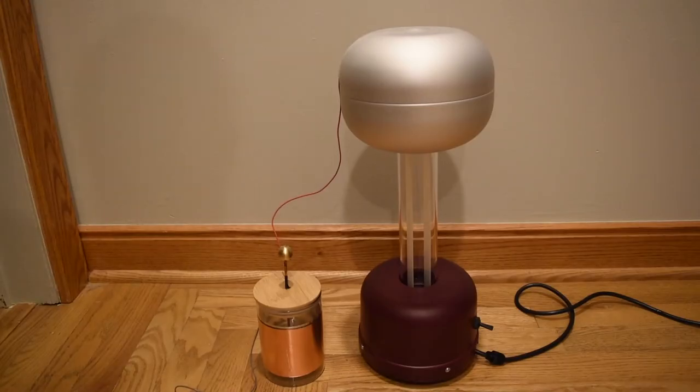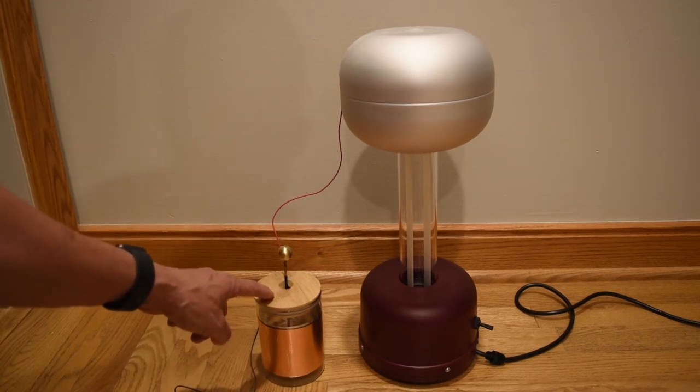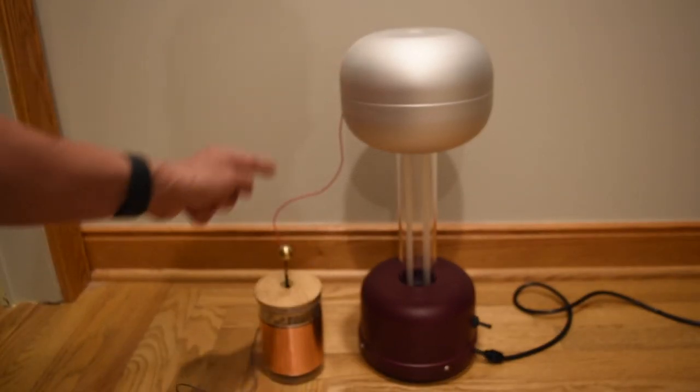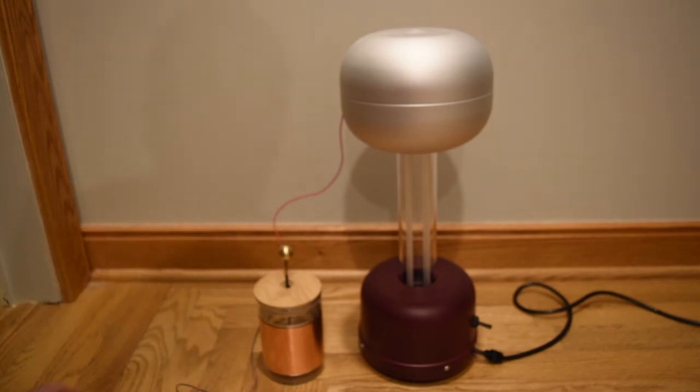I'm going to use the Van de Graaff generator to charge our capacitor. I've connected a wire from the Van de Graaff generator to the electrode that attaches to the inside conductor of our capacitor. And then I have a wire attached to the outside conductor, which I will hold and act as ground.